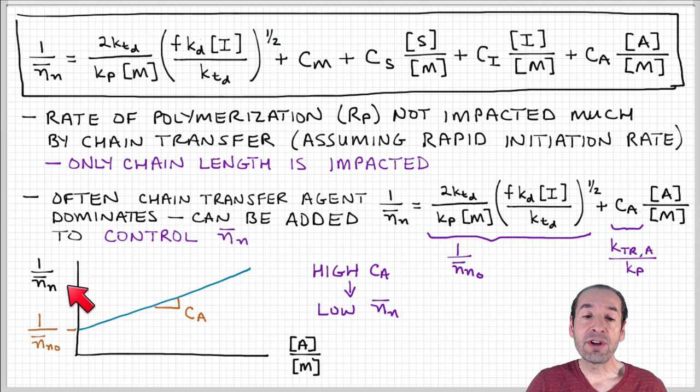So, in other words, if I plot 1 over n bar n as a function of A over M, I should get a linear relationship. The y-intercept is this collection of terms, the first term, 1 over n bar n naught, which, remember, that represents the degree of polymerization where we have only termination by disproportionation.